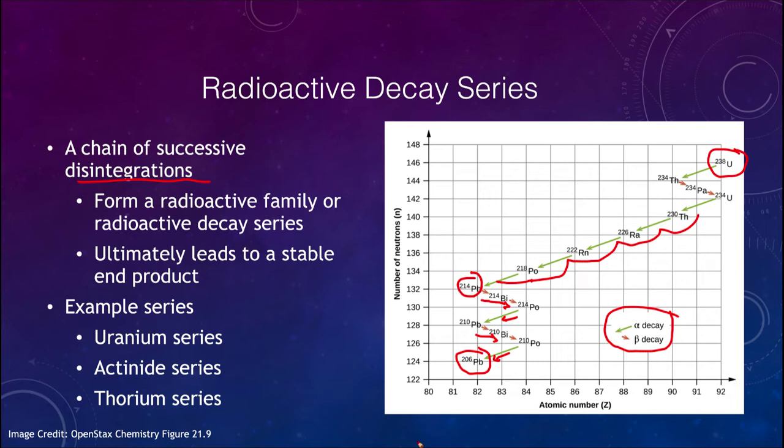In the end, there will be a stable product at the end of any radioactive decay series. For uranium there is the actinide series and the thorium series, depending on exactly what elements you start with — these are several examples you can look at.